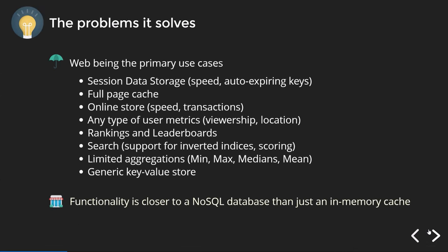What are the problems that Redis actually solves? The web is the primary use case, because it has to do with data storage regarding session, page views, analytics, location, and everything else. Because of the data and scalability issues the web presents, this is what makes Redis very suitable for this type of problem.